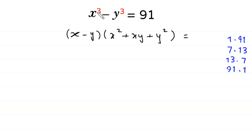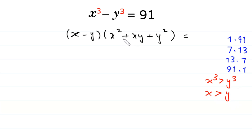Now, x cubed minus y cubed is equal to a positive number, so x cubed is greater than y cubed, which means x is greater than y. Therefore the expression x squared plus xy plus y squared is greater than x minus y — meaning x minus y is the smaller factor. So we select only the cases 1 times 91 and 7 times 13, since 1 is smaller than 91 and 7 is smaller than 13.